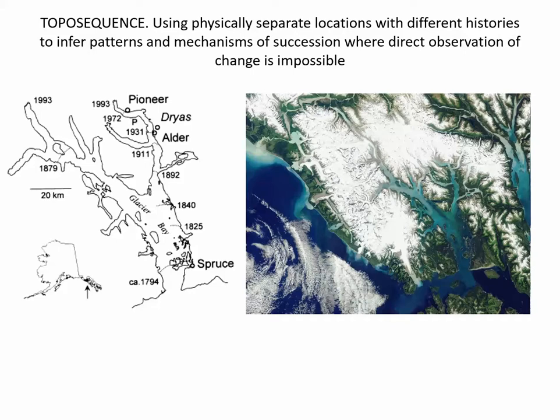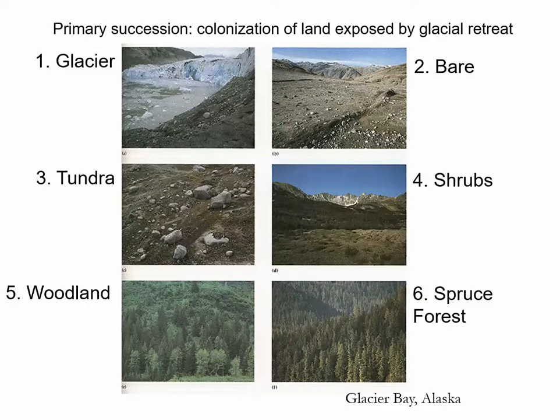Many people have looked at succession at much more proximate scales. Here is Glacier Bay in Alaska — there's been a recession of the glacier, depicted by dates from the early 1800s up to the present. Since the glacier is receding, it's providing new bare ground for habitat. You can estimate the age of different plant communities: glacier, then bare ground, then tundra, then shrubs, then woodland, then spruce forest. With bare ground being nutrient-poor, only a few tundra plants colonize, but eventually you get nitrogen fixers, soil enriches, and later woodland or spruce forest. That's a classic story in succession.